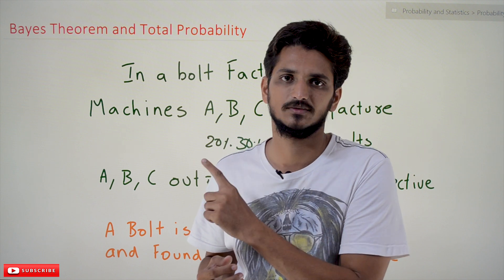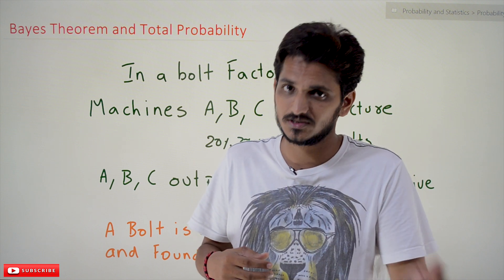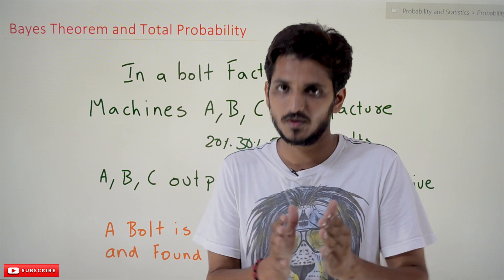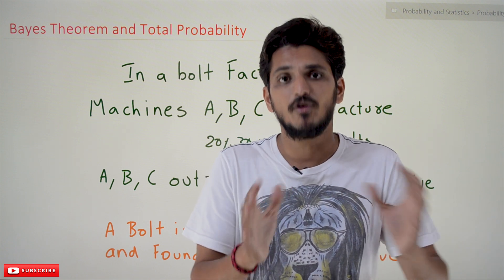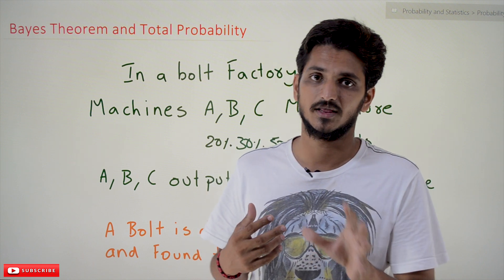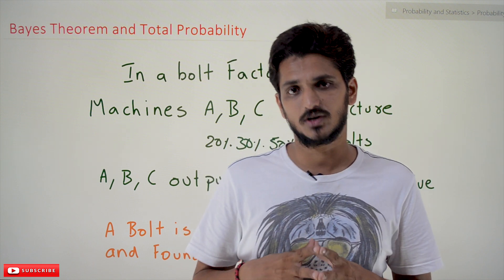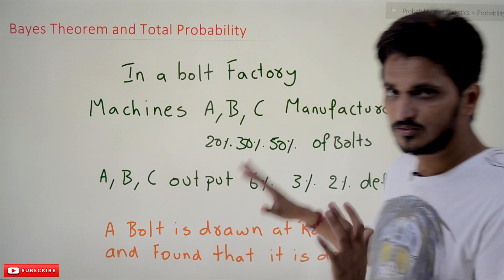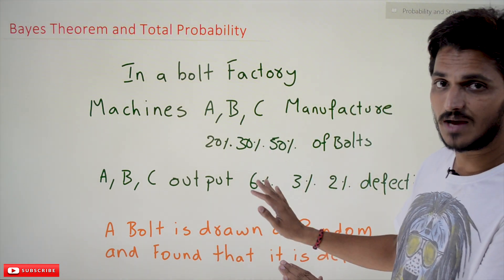In order to make you understand, we previously discussed Bayes theorem and total probability with examples individually. For better understanding, please watch those classes and come back here — the link for the playlist is provided in the description below. Coming to today's class, we are going to understand an example, and along with it understand the definition of Bayes theorem with the total probability concept.